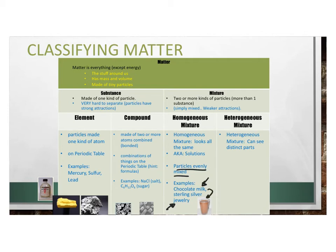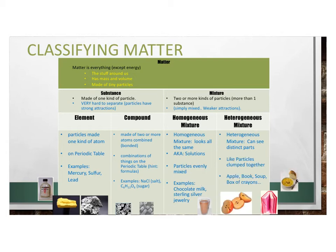If I look at chocolate milk, I can't tell what are the milk particles and what are the chocolate particles. In a heterogeneous mixture, you can see the distinct parts because like particles get clumped together. For example, in an apple I can see the particles clumped together to make the seeds, the fruit, the skin. In a book, I can see the ink particles making the letters, the paper particles, the cover particles. In some soup, I can see the wild rice particles and the broth particles — they are very distinct from one another.